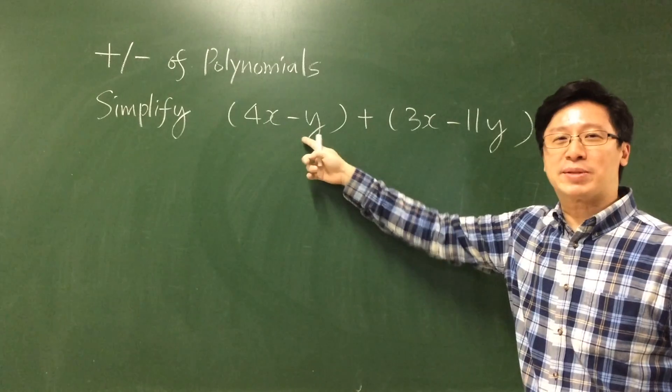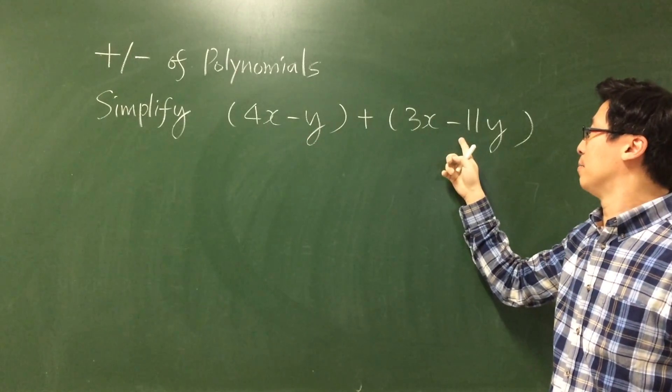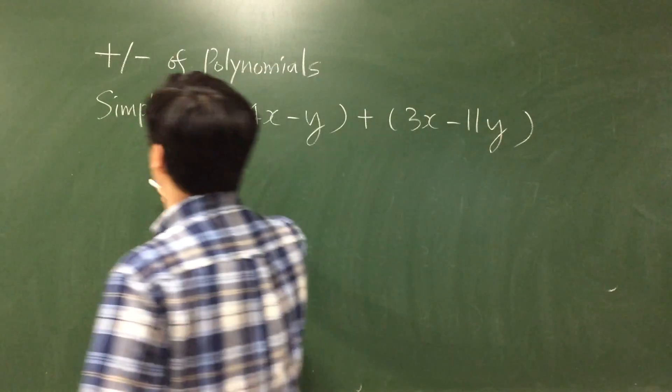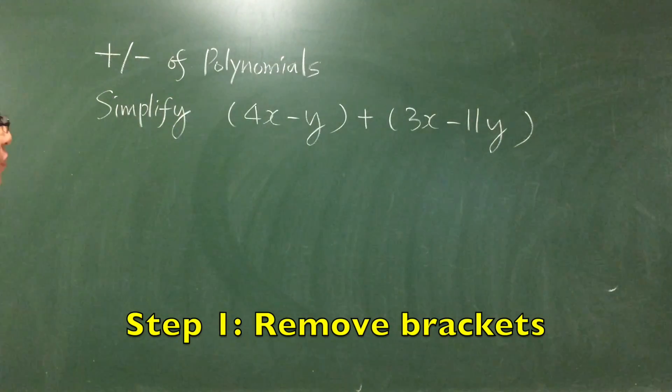So we have a bracket (4x-y) plus (3x-11y). We have a plus sign here. First of all, we remove the bracket.